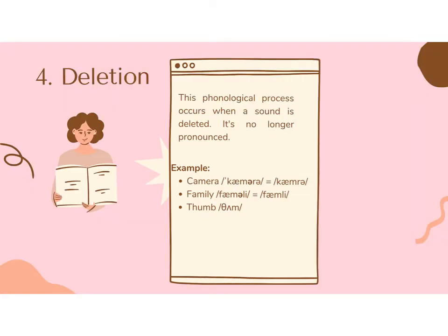Number four: deletion. This phonological process occurs when a sound is deleted — it's no longer pronounced. For example, the word camera becomes camera, where the schwa sound is deleted. Similarly, family becomes family, where the sound is deleted. Another example: the word thumb is pronounced thumb, not thumb, because the B sound is deleted.